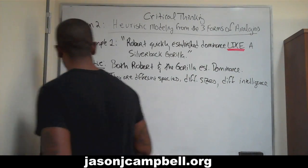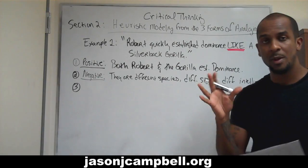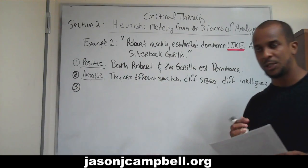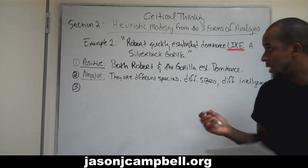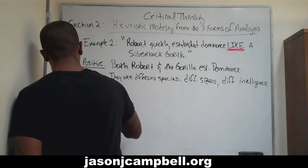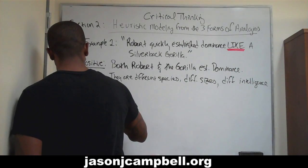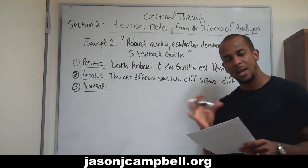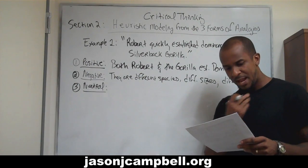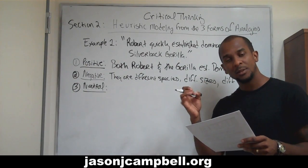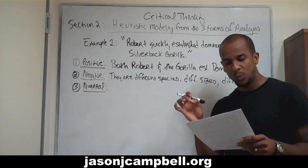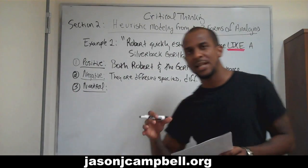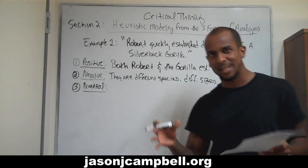And then number three — the neutral form. These are properties that may or may not be shared. The precise way in which dominance was established is neutral. We don't know precisely if they shared exactly that.